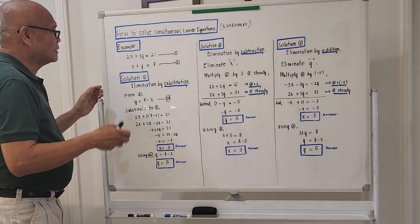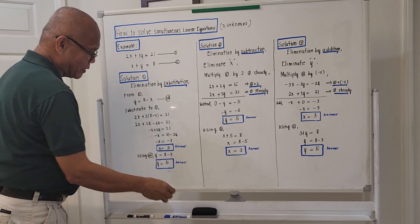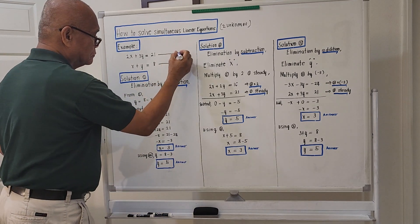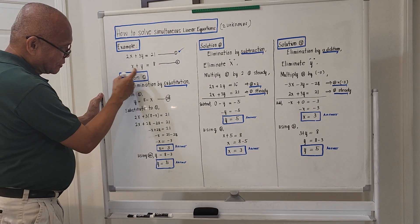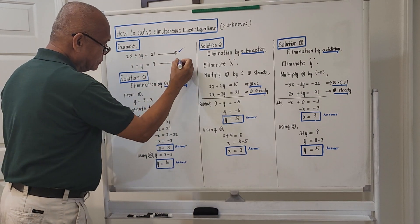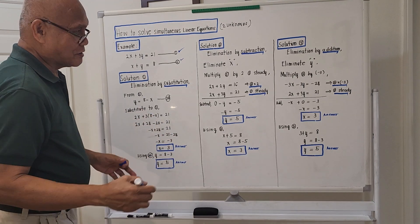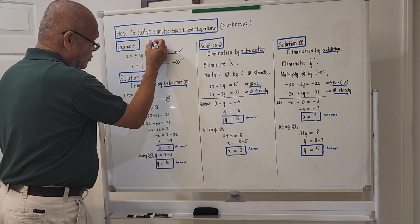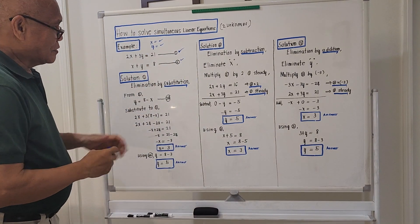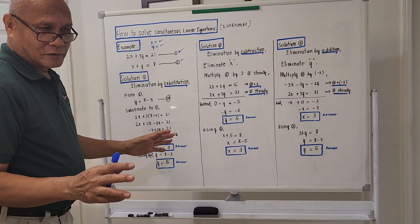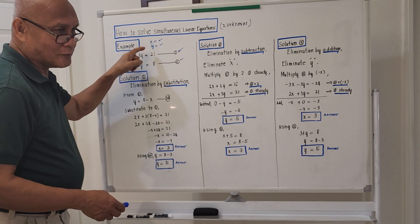I will give you an example. The first equation is 2x plus 3y equal to 21. We call this equation number 1. It's a linear equation. The second equation is x plus y equal to 8. That will be equation number 2. The unknown in algebra is always x and y, so we are solving for the value of x and the value of y. Since these are linear equations, the solution for x and y is that there will only be one value for x and one value for y.